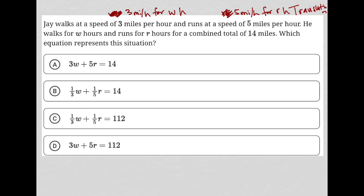So in terms of units, if I multiply 3 times W, the hours cross out and I just have miles, which is what I want. If I add that to 5 times R, the hours cross out as well, and I just have the number of miles ran. We know that altogether that's 14 miles. So the equation is 3W + 5R = 14, and therefore answer choice A is correct.